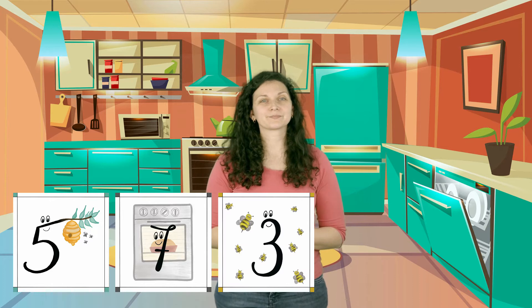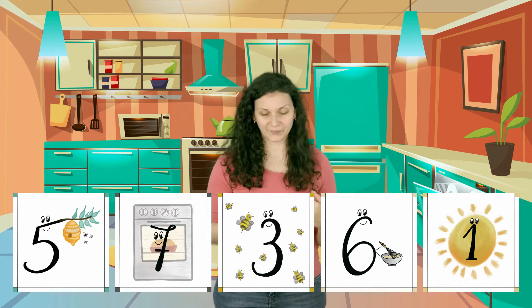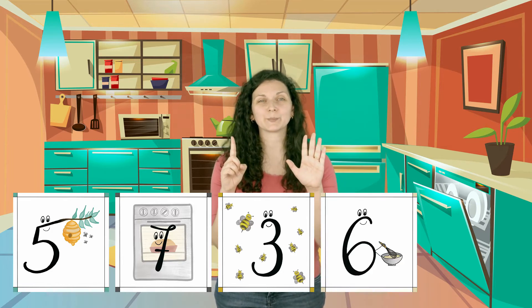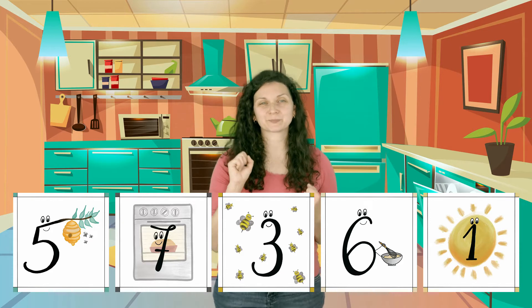All right, we have: five, five, five, seven — oven seven — three, six — mix six — one — sun one. All right, next. What are those numbers on your screen?